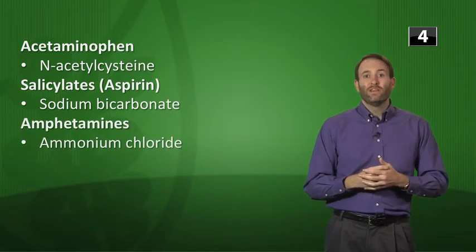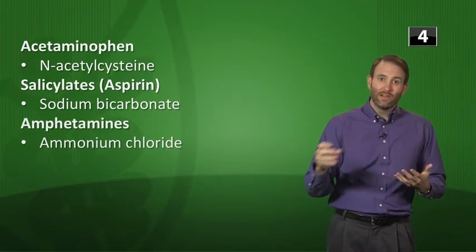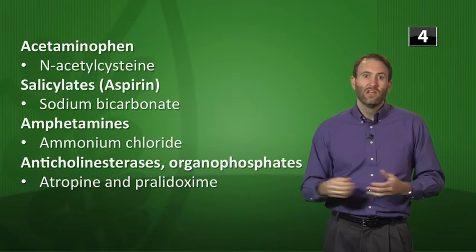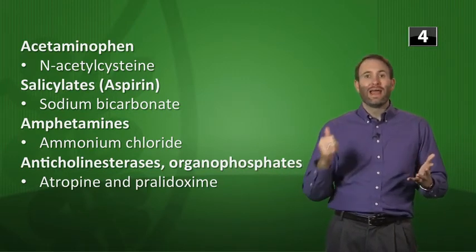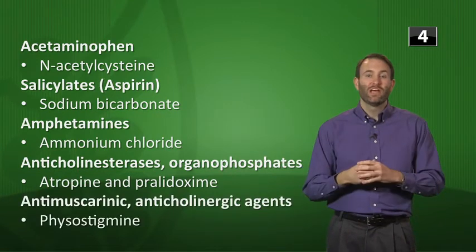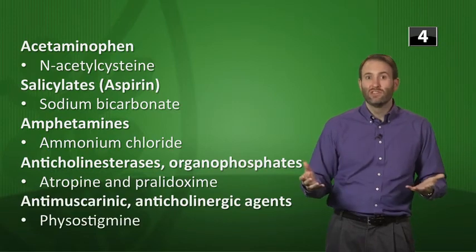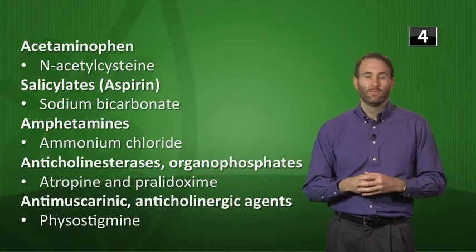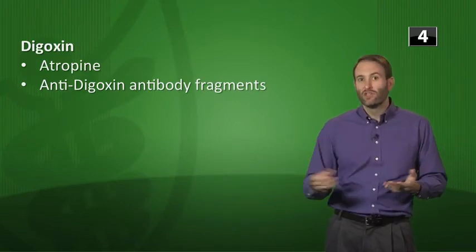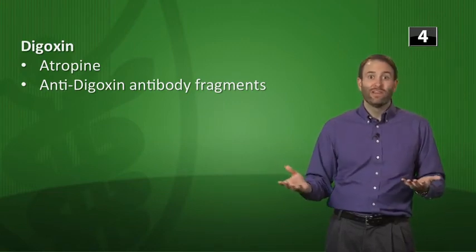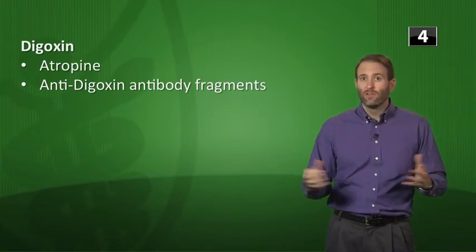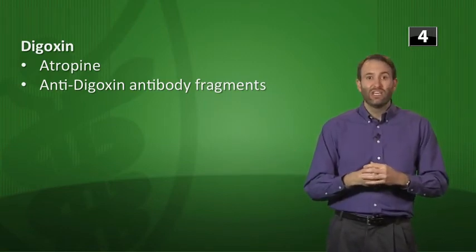Next, we have amphetamine. These are weak bases. You're going to acidify the urine with ammonium chloride. Next, we have the anticholinesterases or organophosphates. The reversal agent, the two things you're going to remember are atropine and pralidoxime. Anti-muscarinic, anticholinergic agents. Remember, your prototype anti-muscarinic is atropine. So we fix atropine overdoses with physostigmine. For digoxin, there's multiple things. You got to stop the dig, of course. You want to make sure you're normalizing your potassium, your magnesium. If there's bradycardia, then you can give things like atropine. You might even have to do some cardiac pacing if you had to. But if there are lots of serious things going on, then you might have to use the anti-dig antibody fragments.